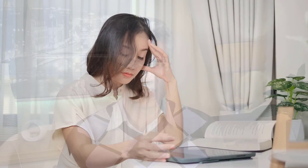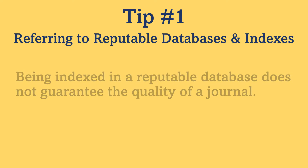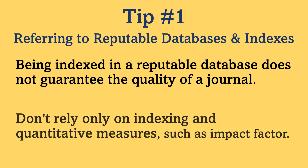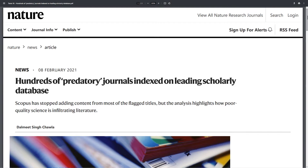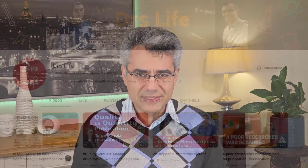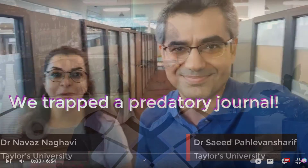If you are not highly experienced in research, my suggestion is to stick to the reputable search engines mentioned in this video. Please keep in mind that while being indexed in a reputable database is generally a positive sign, it does not guarantee the quality of a journal. So to assess the quality of a journal, don't rely only on indexing and quantitative measures such as impact factor. We once submitted a nonsense manuscript — put together from random sentences — to a Scopus-indexed journal, and the paper was accepted. See the link to that video in the description below.